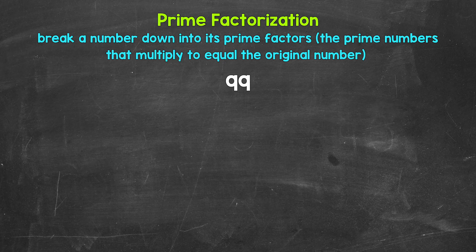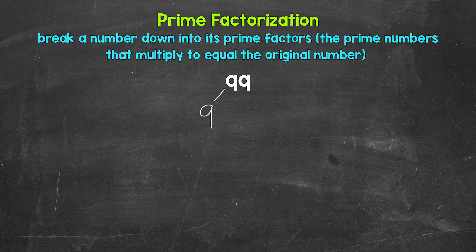So taking a look at 99, we need to start breaking this down by thinking of two factors, two numbers that multiply to give us 99. Well, 9 and 11 are factors of 99. So let's break this down into 9 and 11.